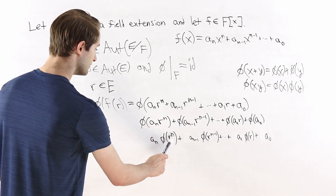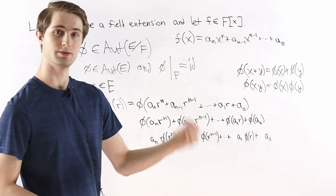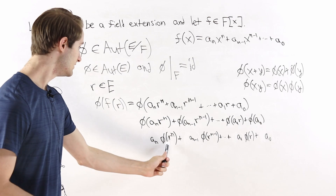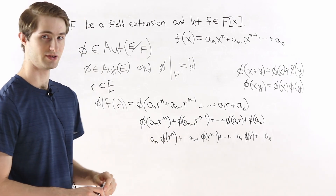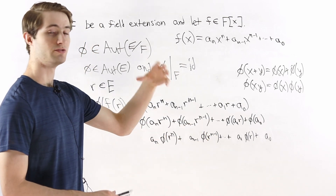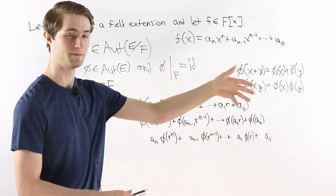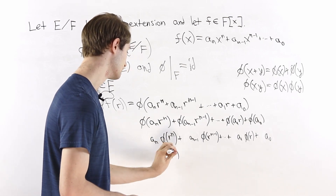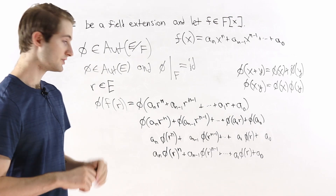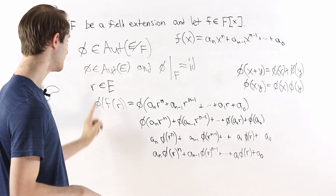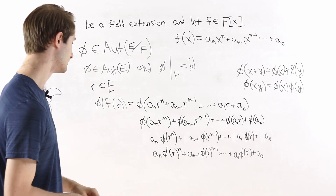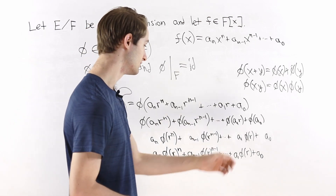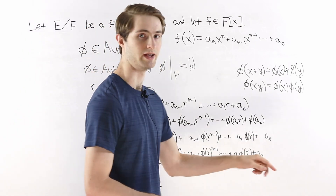Finally, phi of r to the n: since r to the n is just r times r times r a bunch of times, and phi of x times y equals phi of x times phi of y, we can bring the power of n outside — phi of r to the n equals phi of r raised to the power of n. So the final simplified form is: phi of f of r equals a_n times phi of r to the n, plus a_{n-1} times phi of r to the n minus 1, and so on, down to a_1 times phi of r plus a_0.